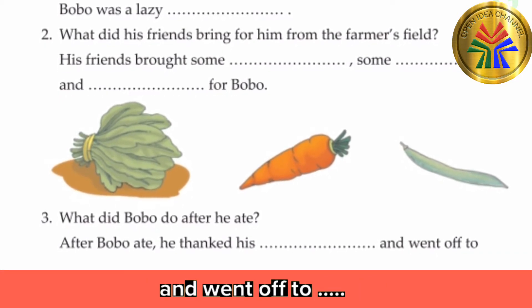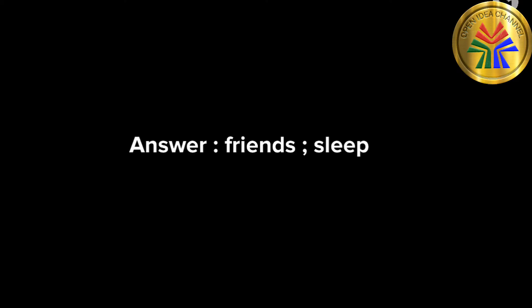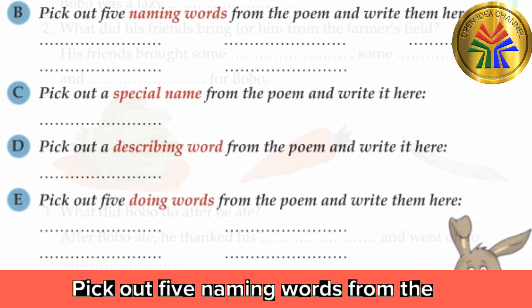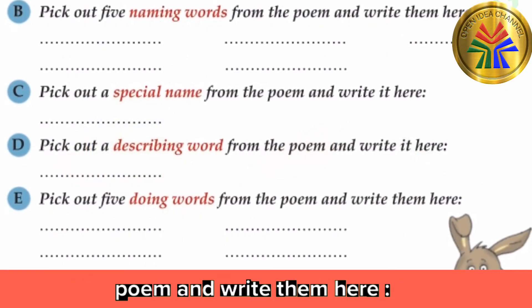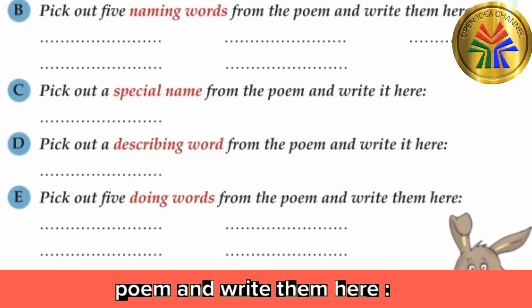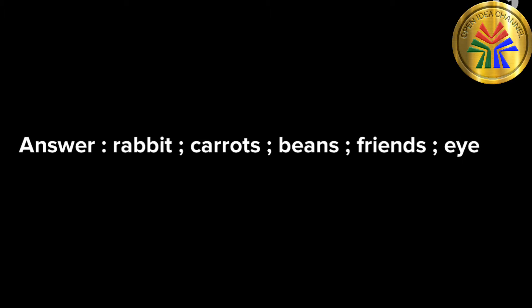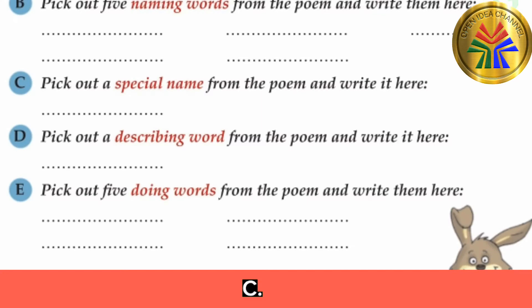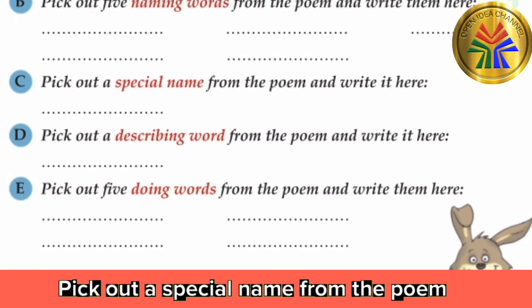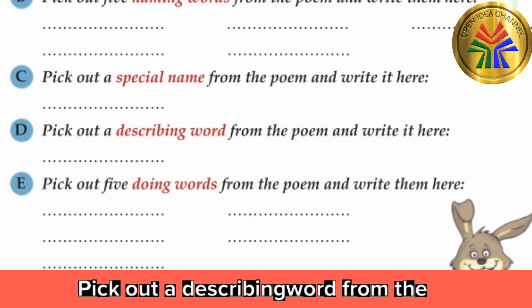B. Pick out five naming words from the poem and write them here. Answer: rabbit, carrots, beans, friends, field. C. Pick out a special name from the poem and write it here. Answer: Bobo.